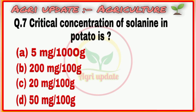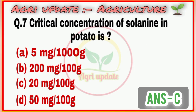Question number 7: Critical concentration of Fe in potatoes. First option is 5 kg per 1 kg, second option is 200 mg per 100 mg, third option is 20 mg per 100 mg, fourth option is 50 mg per 100 mg. The right answer is option number C, 20 mg per 100 mg.